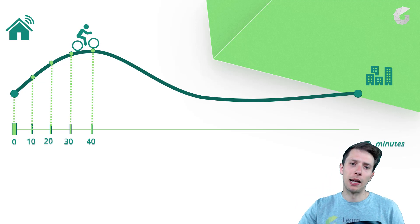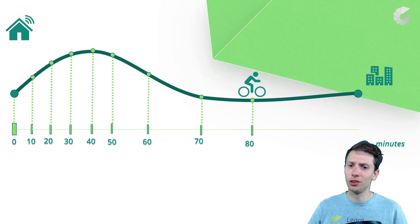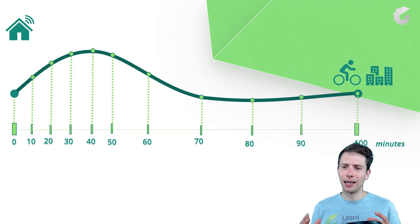Afterwards, after the hill it was much faster to go down. So you can see that the distances changed a lot. At 80 minutes he was nearly close to the city. And finally it took him 100 minutes to go from his house to the city.